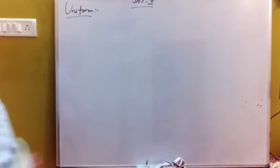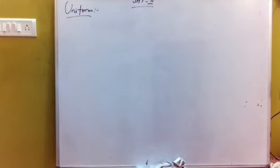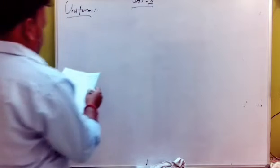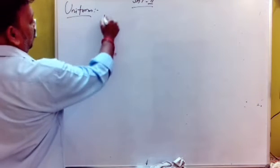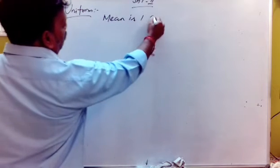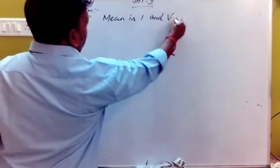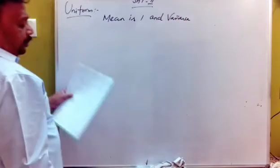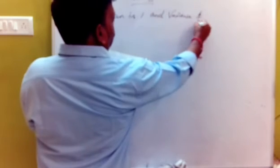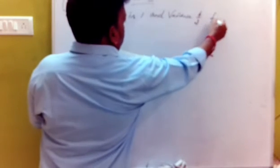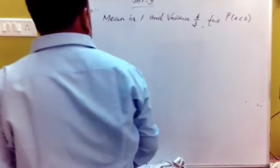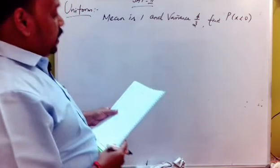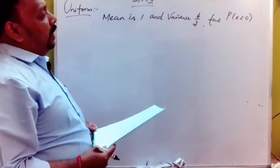We will answer the question. The question is: the mean is 1, and the variance is 4 by 3. Find P of x is less than 0. We will answer the mean and the variance.